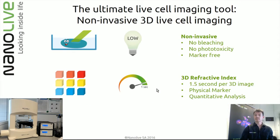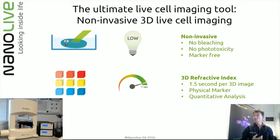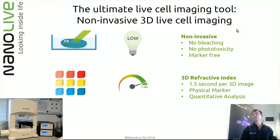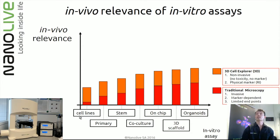Besides being absolutely non-invasive, measuring the refractive index offers other advantages. First, it's extremely fast — about 1.5 to 1.7 seconds for a complete 3D reconstruction. Second, being a physical marker — unlike GFP — it uses absolute units, not relative units, meaning it can be used to selectively mark structures and perform quantitative analysis. Using the 3D Cell Explorer as a completely non-invasive imaging system will increase the in vivo relevance of your study, regardless of which type of model you are using.